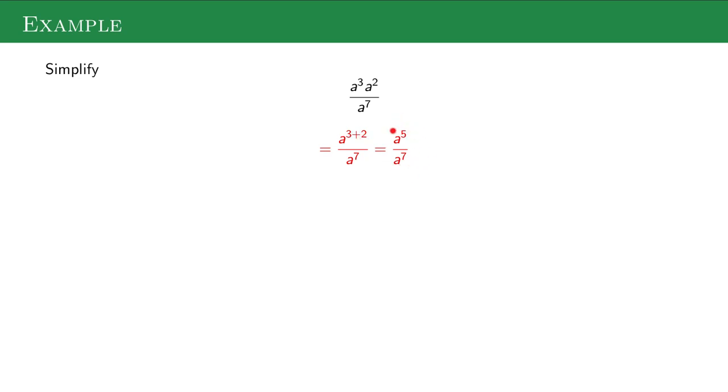Now these parts are as simple as possible, so I can worry about the division bar as I subtract. I do five minus seven and get a to the negative two. Generally, we don't like our final answers having a negative exponent. I'm going to rewrite it using my negative exponent rule, which is one over a².